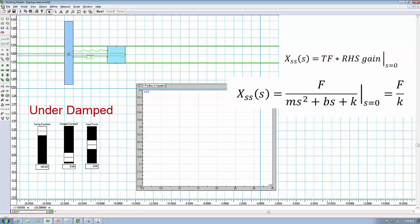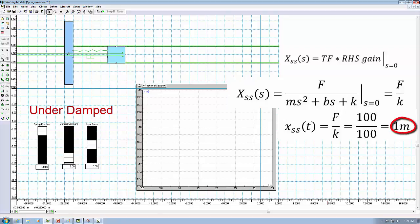That is F over K in our system. It is the same solution in the time domain. So if our input force is 100 N, our steady-state solution should be F over K equals to 1.